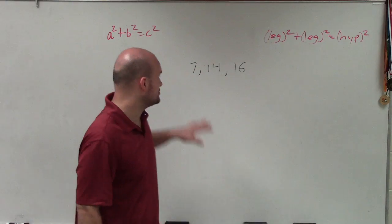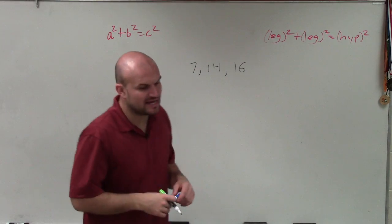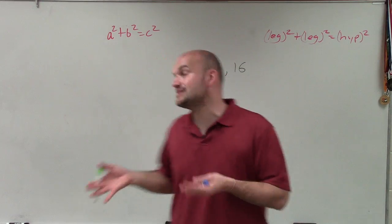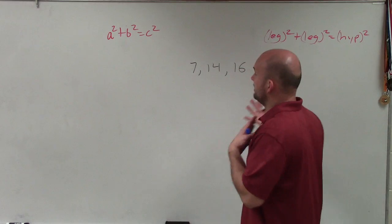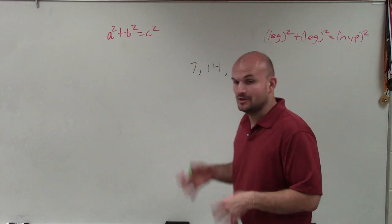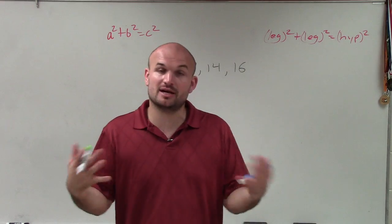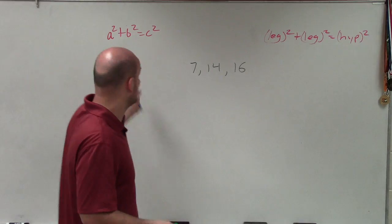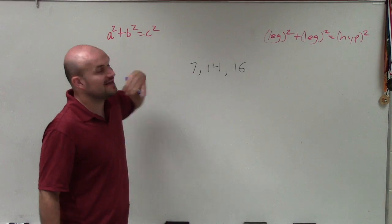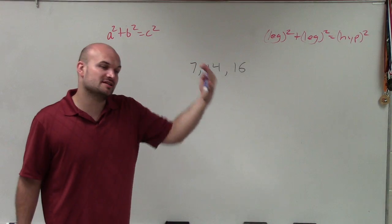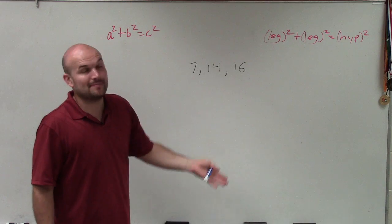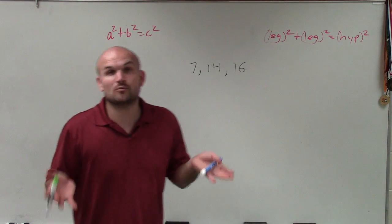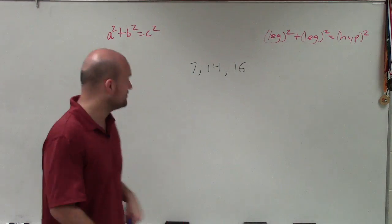Welcome. What I'd like to do is use the Converse of the Pythagorean Theorem to help you identify if these are the sides of a right triangle. We're going to apply the Pythagorean Theorem formula, and if the sum of the legs squared is equal to the hypotenuse squared, then the Pythagorean Theorem works and we have a right triangle.